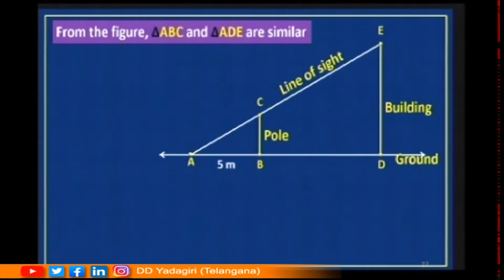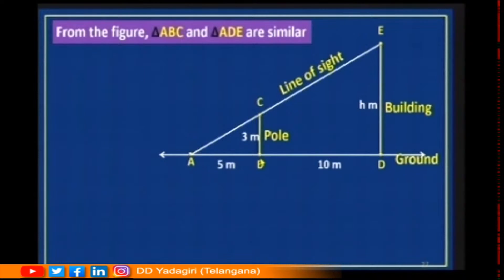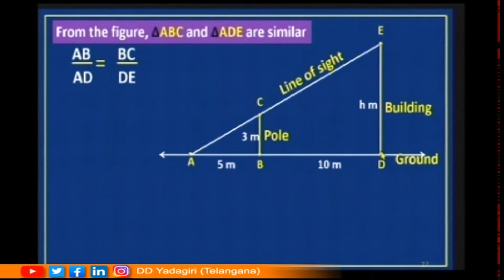Triangle ABC and triangle ADE are similar triangles — the small triangle and the big triangle are similar to each other. The distance between Sudha and pole is 5 meters, height of the pole is 3 meters, and distance between pole and building is 10 meters. We don't know the height of the building, so we take it as h. Triangle ABC is similar to triangle ADE, so the corresponding sides are in proportion.